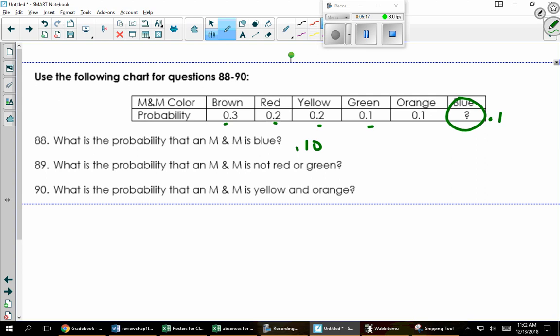What's the probability that an M&M is not red or green? So I don't want red or green. So it's everything that's left, which is either 30 plus 20 plus 10 plus 10, or 100 minus those two.